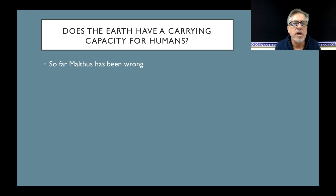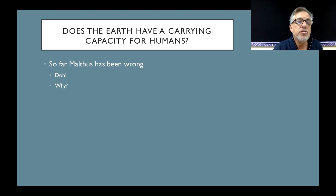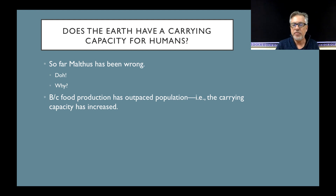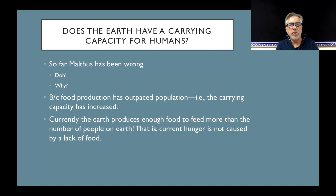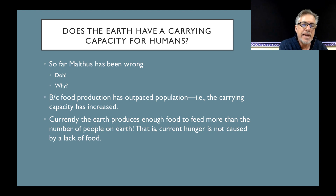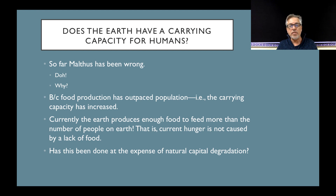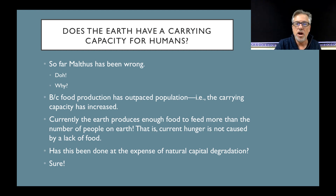Does the Earth have a carrying capacity for humans? So far, Malthus has been wrong in his predictions. The main reason is that food production has outpaced population because we are a clever species that has found technological ways to increase carrying capacity. Currently, the Earth produces enough food to feed more than the number of people on Earth, so current hunger is not caused by a lack of food — not even a local lack of food. Every country regularly produces enough food to feed its population, though this has been done at the expense of natural capital degradation.